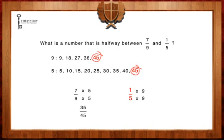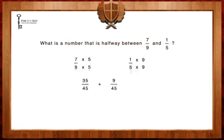In order to find a number that is halfway between these two fractions, we're going to add them and divide in half. 35 over 45 plus 9 over 45 equals 44 over 45. Next, we are going to multiply this fraction by a half to find a number that is halfway between seven ninths and one-fifth.